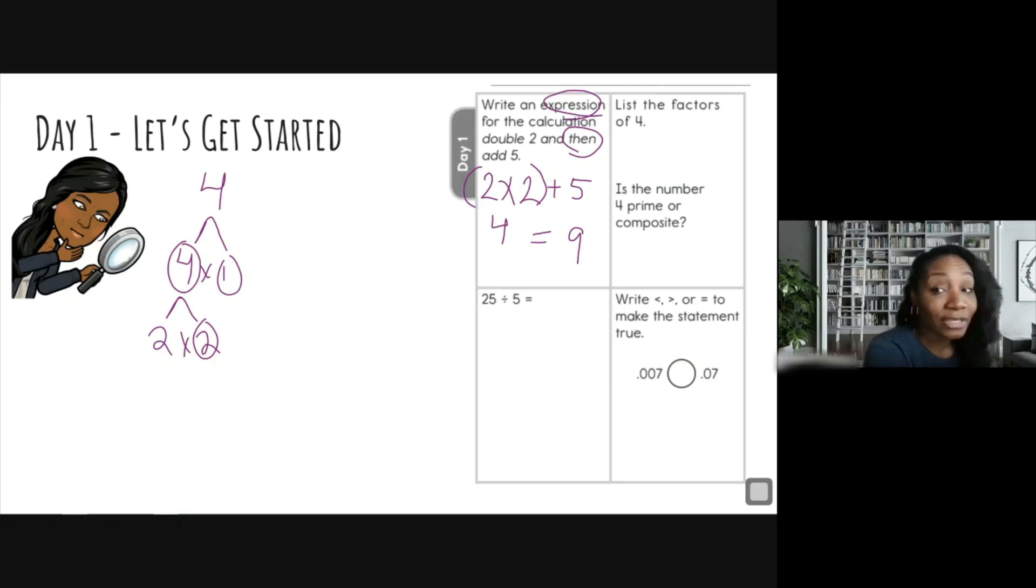Okay, so I'm going to list them because that is what my question told me to do. So I have one, two, and four. All right, so the next question is: is the number four prime or composite?